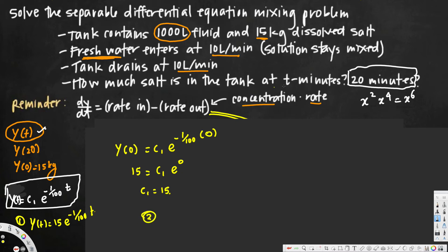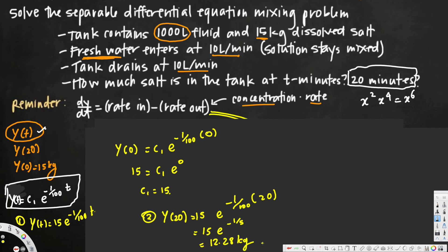Now for y(20): we plug in t = 20, giving y(20) = 15 · e^(-20/100) = 15 · e^(-1/5). Calculating this gives approximately 12.28 kilograms. That's how we solve this type of mixing problem. There are more videos on mixing and other applied differential equations in the playlist — subscribe and see you next time!